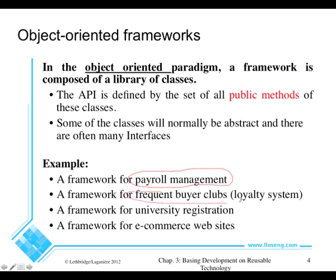Frequent buyer clubs or loyalty programs might come as frameworks as well. All such applications accumulate points, but you might have to hook that into your inventory system and point-of-sale system so people can obtain points. You might also have to hook it into your e-commerce system. All e-commerce websites share the common idea of a checkout process — you click on a bunch of items, put them in your cart, then check out at the end, and they're all the same. However, there are many differences: you would probably have special types of products, maybe demonstrations of your products, links to web pages of your products, and different kinds of frequent buyer or loyalty systems to hook into your system.